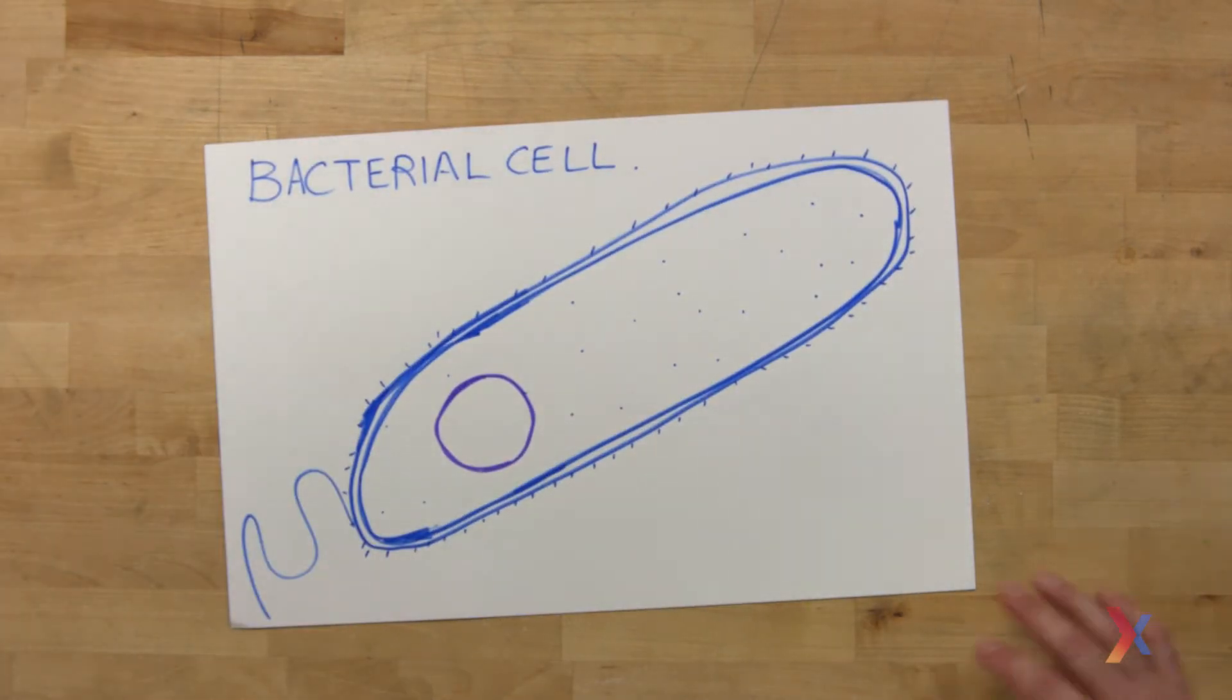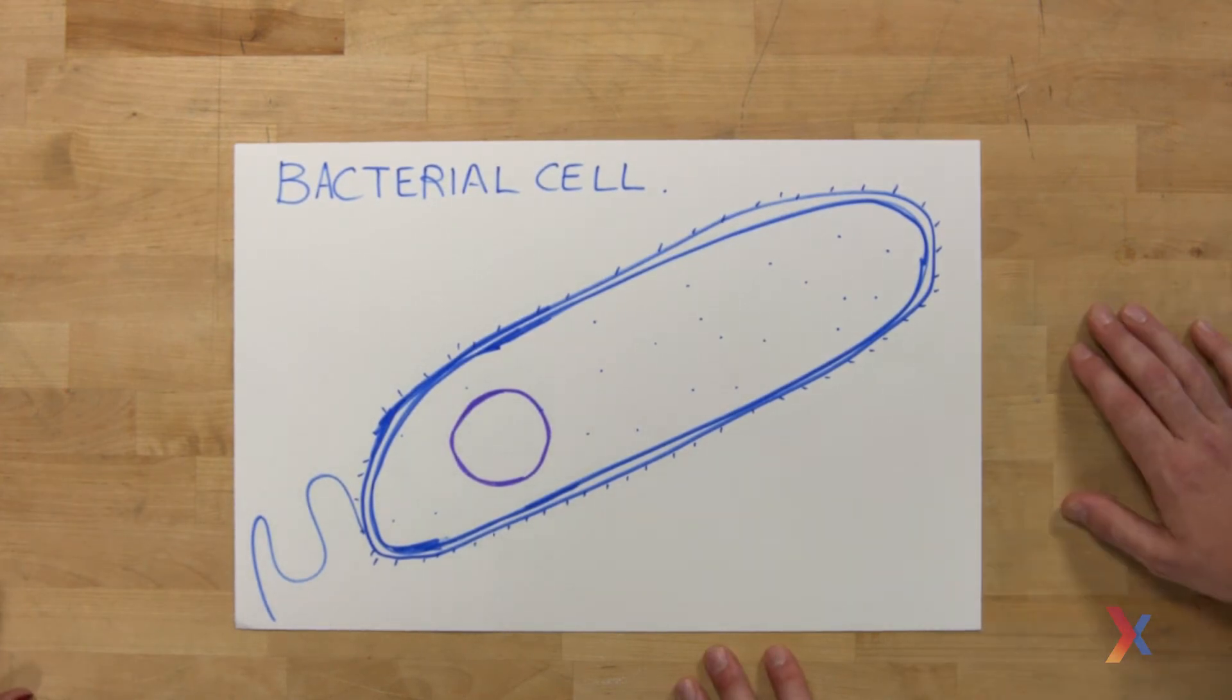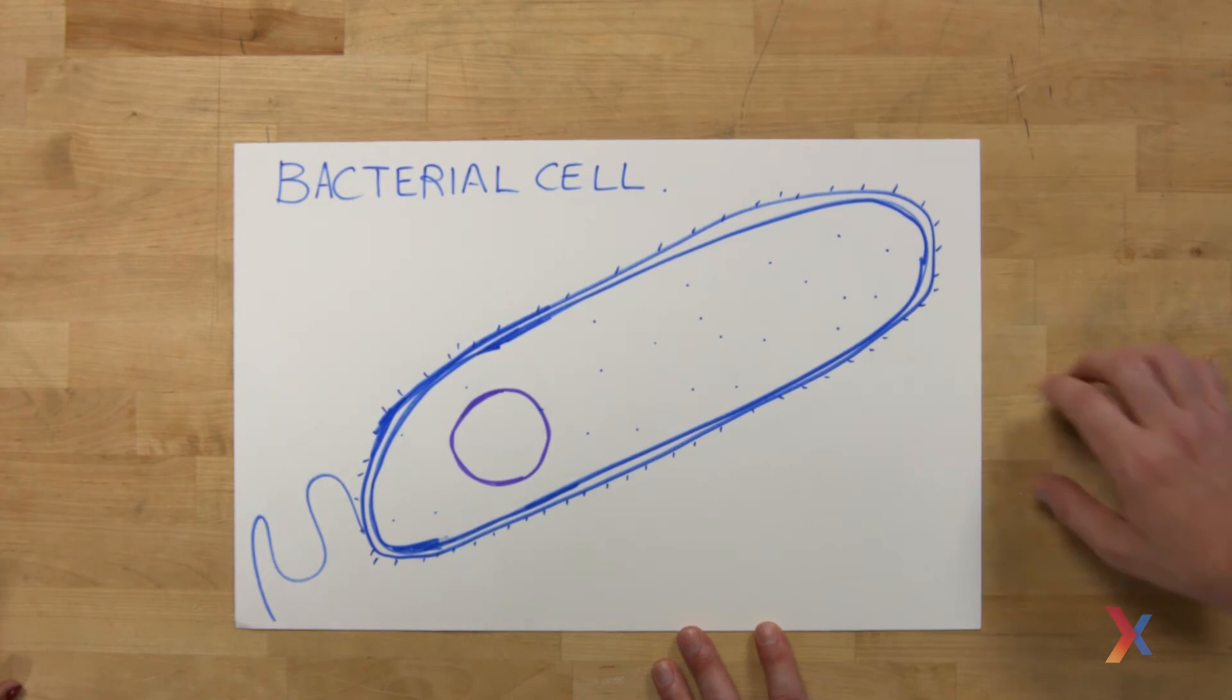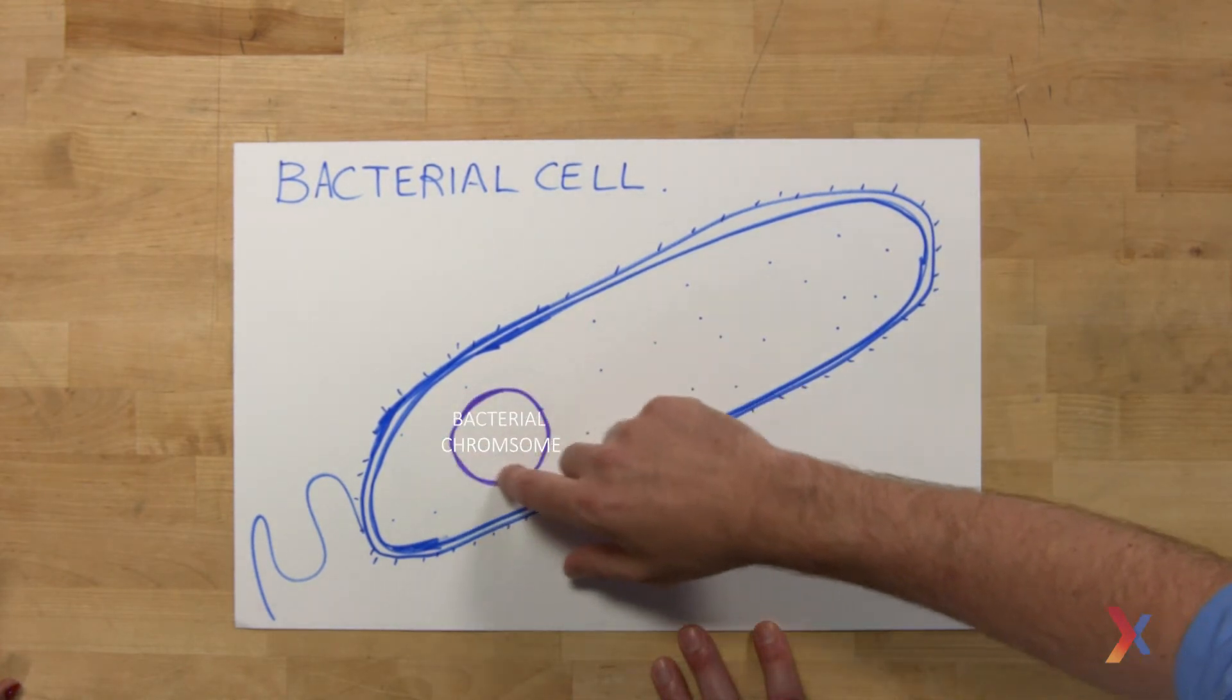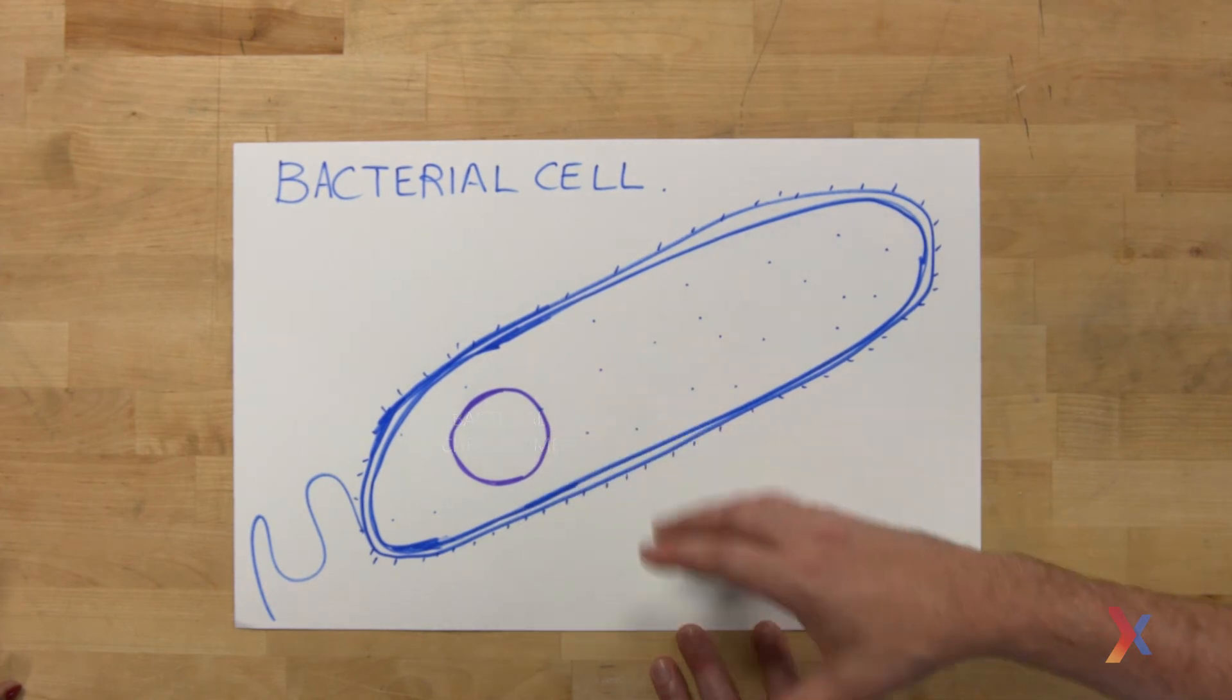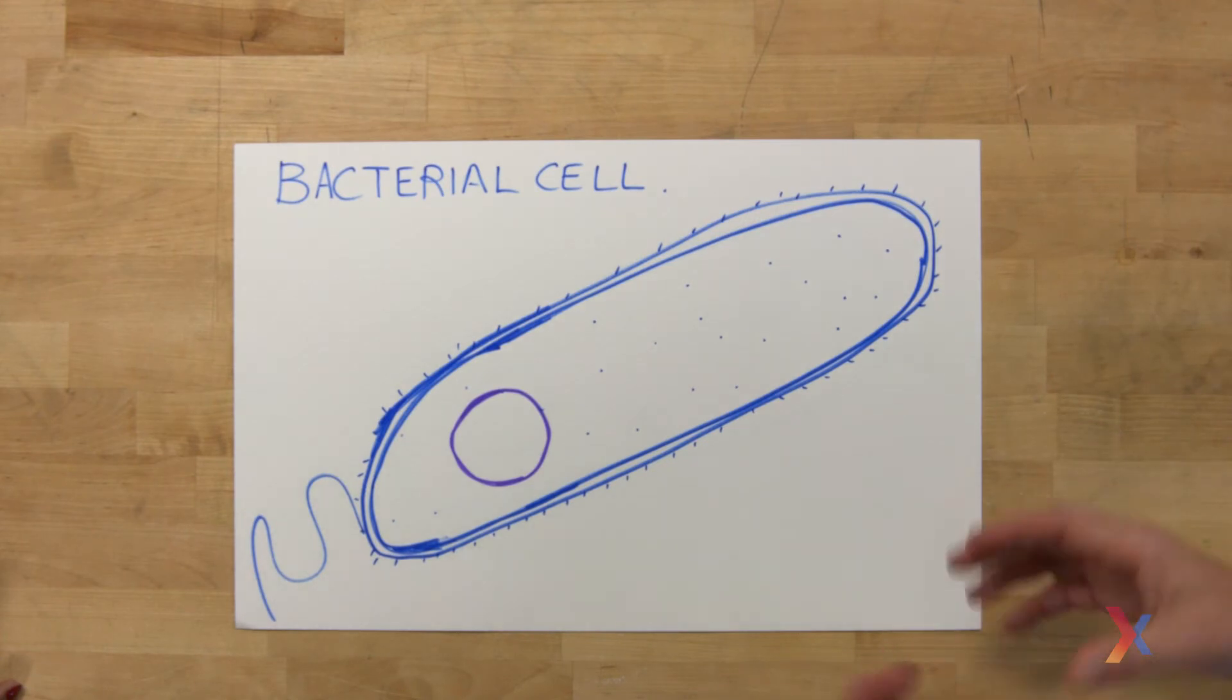So contrasting a eukaryotic cell with a bacterial cell, we're only going to see a single chromosome in a bacterial cell. And so it's usually represented by a single loop that we see here. And we would notice that it's not going to be enclosed within a nucleus. Sometimes you'll see it referred to as a nucleoid region, but it's not inside an organelle because bacterial cells don't have membrane-bound organelles.